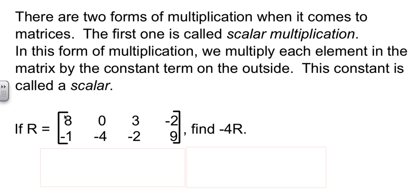So suppose they give me a matrix R. And here's a good matrix R. So what they're asking me to do is take negative 4 times this entire matrix. Well, this is a lot like the idea of the distributive property. You're going to take negative 4 times each value. Each and every one of them gets multiplied by negative 4.